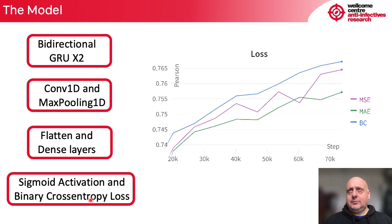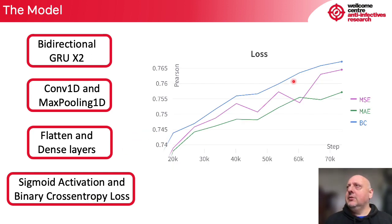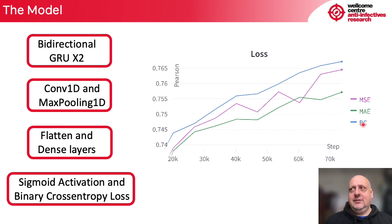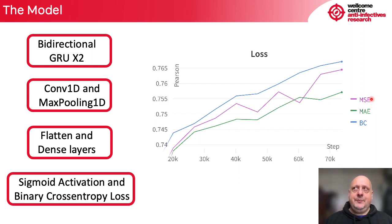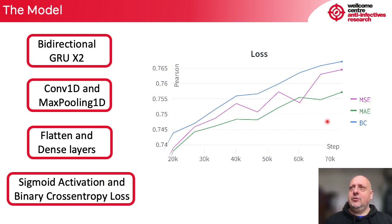From this graph you can see that the binary cross-entropy loss works better than the MAE and the MSE, at least for this architecture.